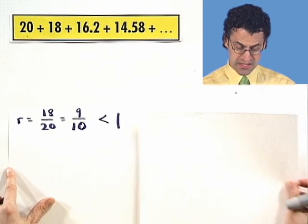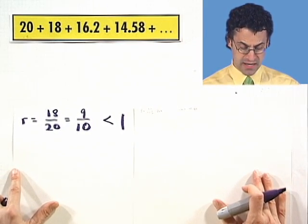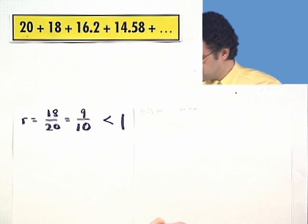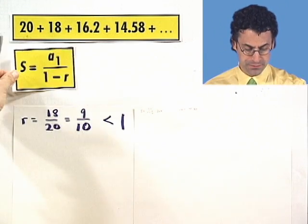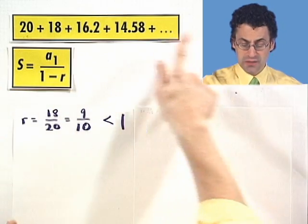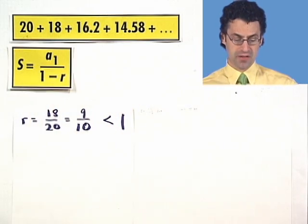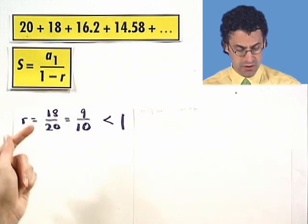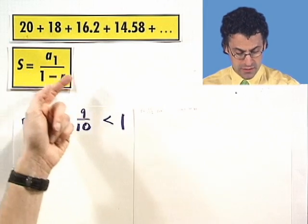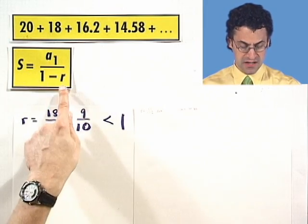And what is it going to converge to? What's the sum of all those infinitely many numbers added together? Well, here's the very simple, beautiful formula. The sum of all of these terms, all infinitely many of them, is just going to be the first term over 1 minus the constant ratio.